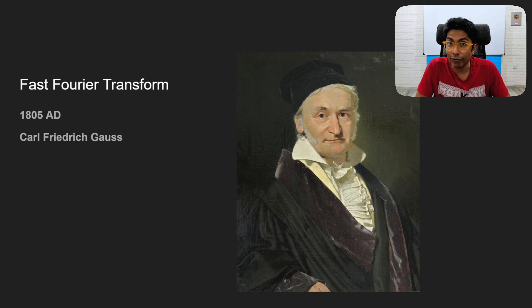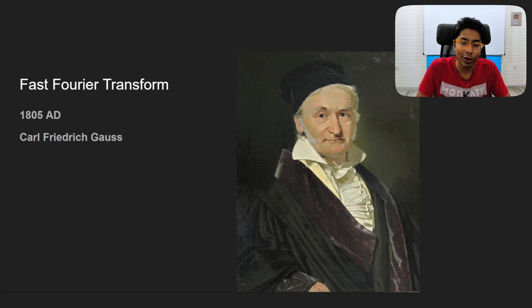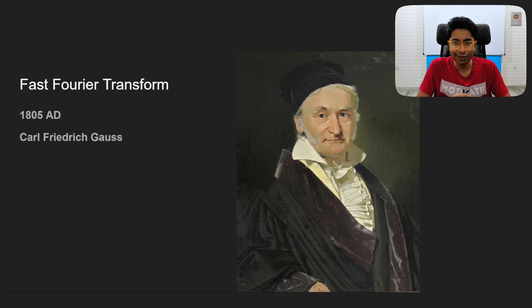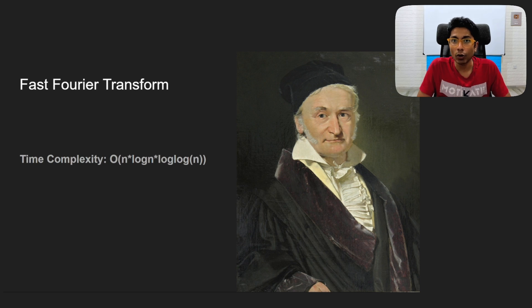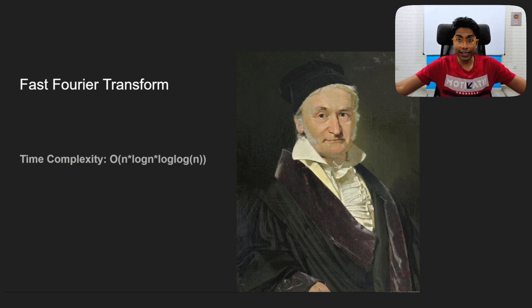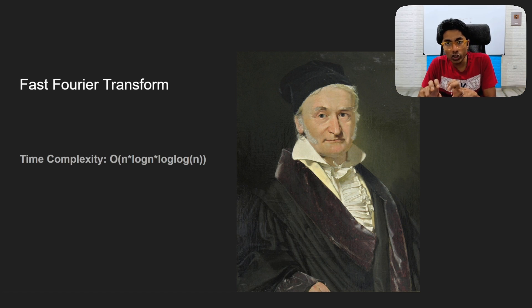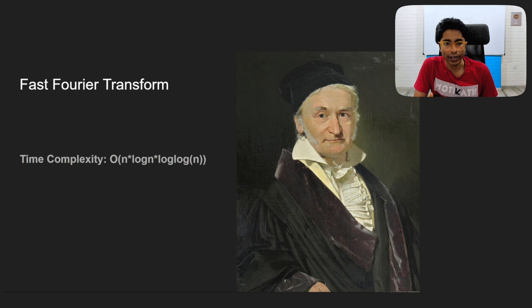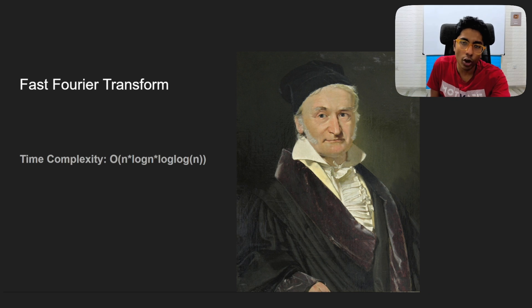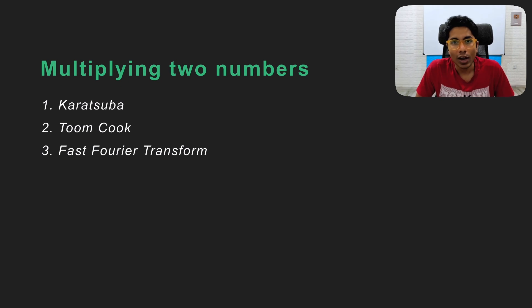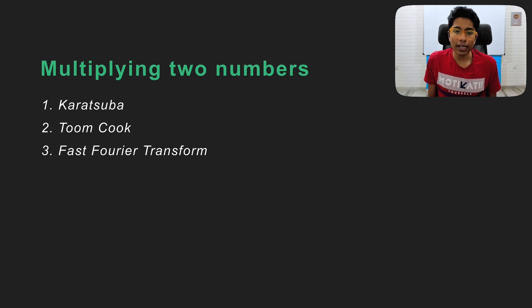This technique actually predates Karatsuba and Toom-Cook — it goes back to 1805 and the famous mathematician Gauss, known for mathematical induction. The Fast Fourier Transform has incredible time complexity: O(n log n · log log n). The log log n factor arises from multiplying numbers on the 2D plane, but since log log of a number like 10 requires only 2 digits to represent, it can essentially be ignored. The FFT is effectively O(n log n).